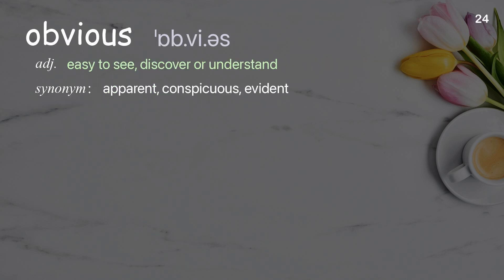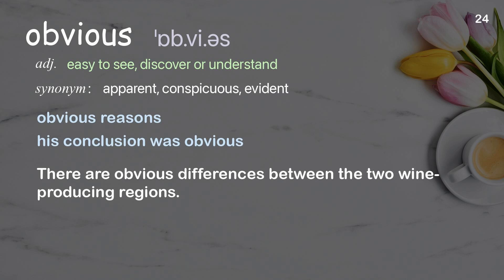Obvious: Easy to see, discover, or understand. Examples: Obvious reasons. His conclusion was obvious. There are obvious differences between the two wine-producing regions.